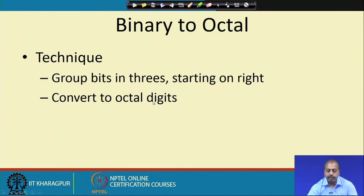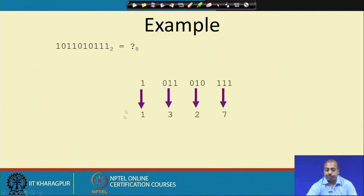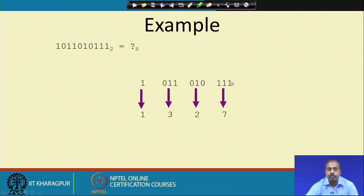You can group bits in 3s starting on the right and convert to octal digits. We will explain it with an example. Suppose we have a binary number and we want to get the corresponding octal number. We make groups of 3 starting from the right side. You should not start from the left side — you should start from the right side.